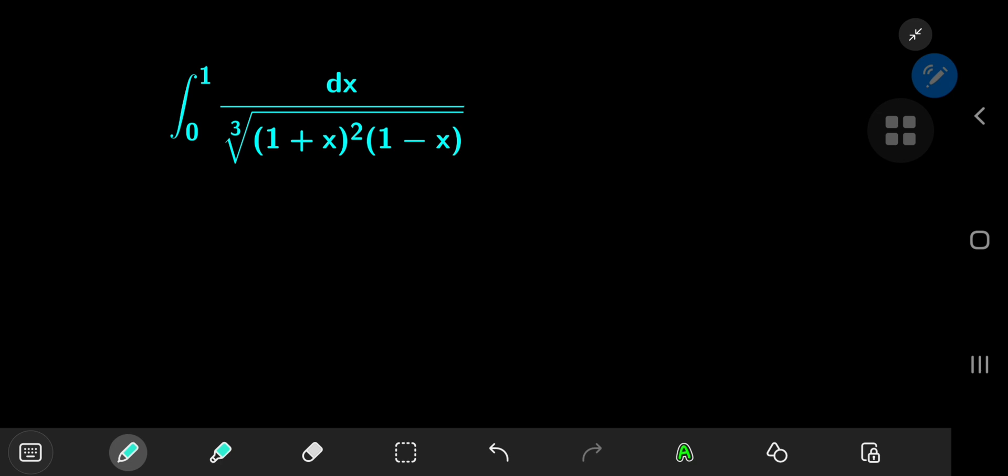The structure here reminds me of one of my favorite substitutions, the Weierstrass substitution, which is pretty useful if you have terms like 1 plus x, 1 minus x, or related terms like 1 plus or minus x squared. The limits of integration here are 0 and 1, so all of these conditions are well suited to apply the Weierstrass substitution.